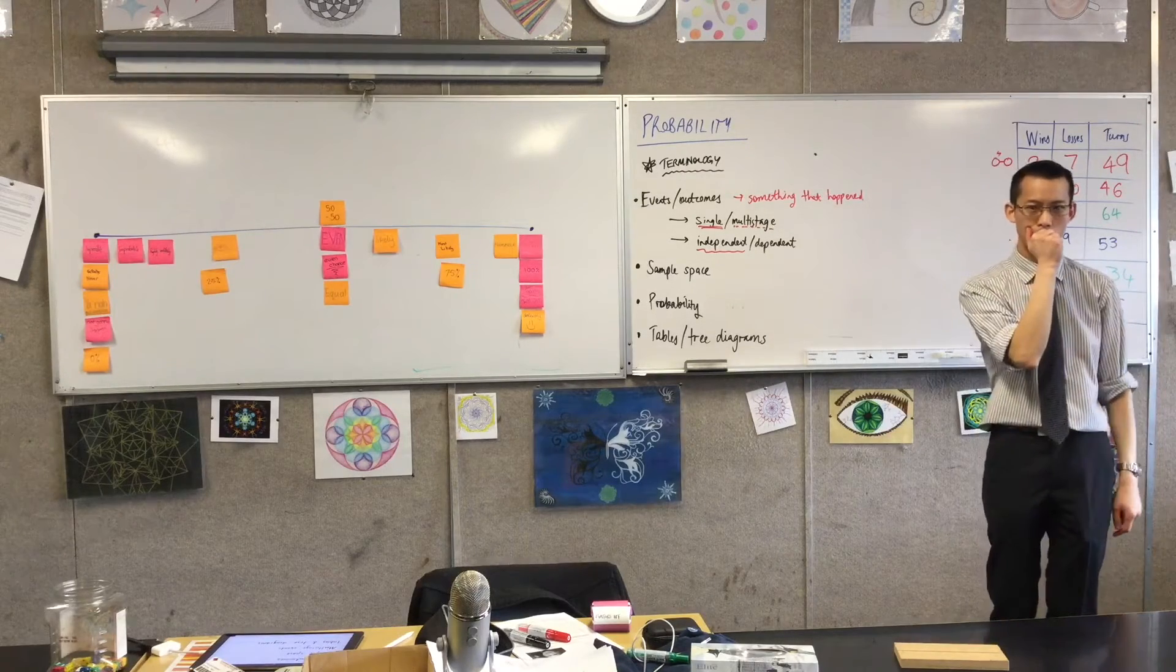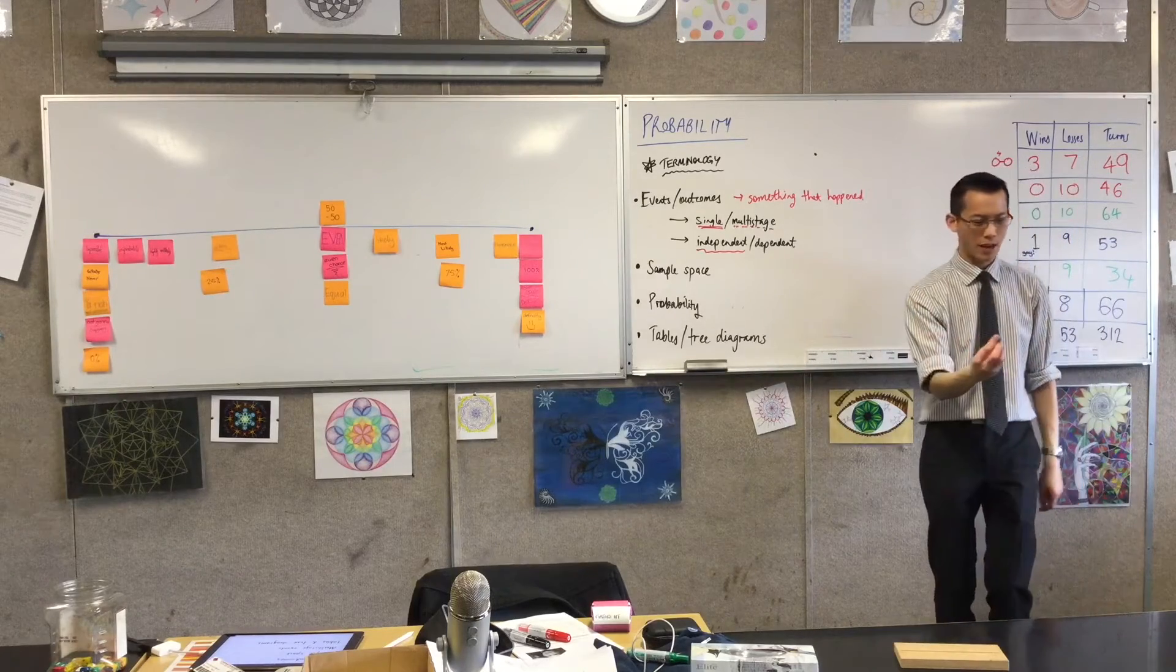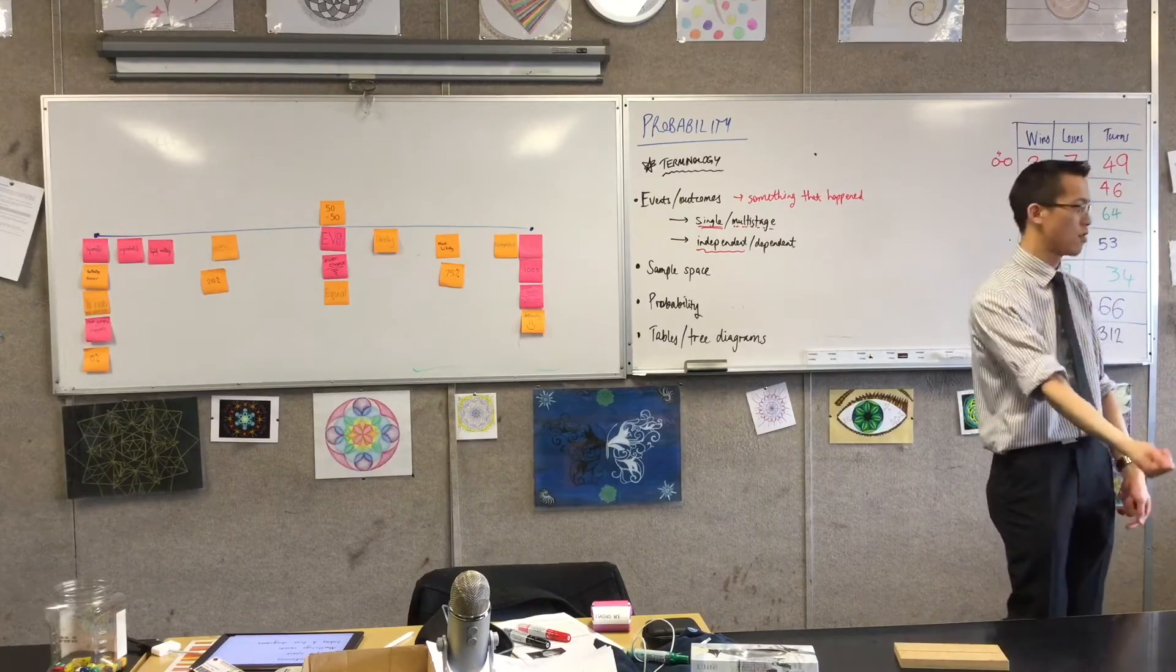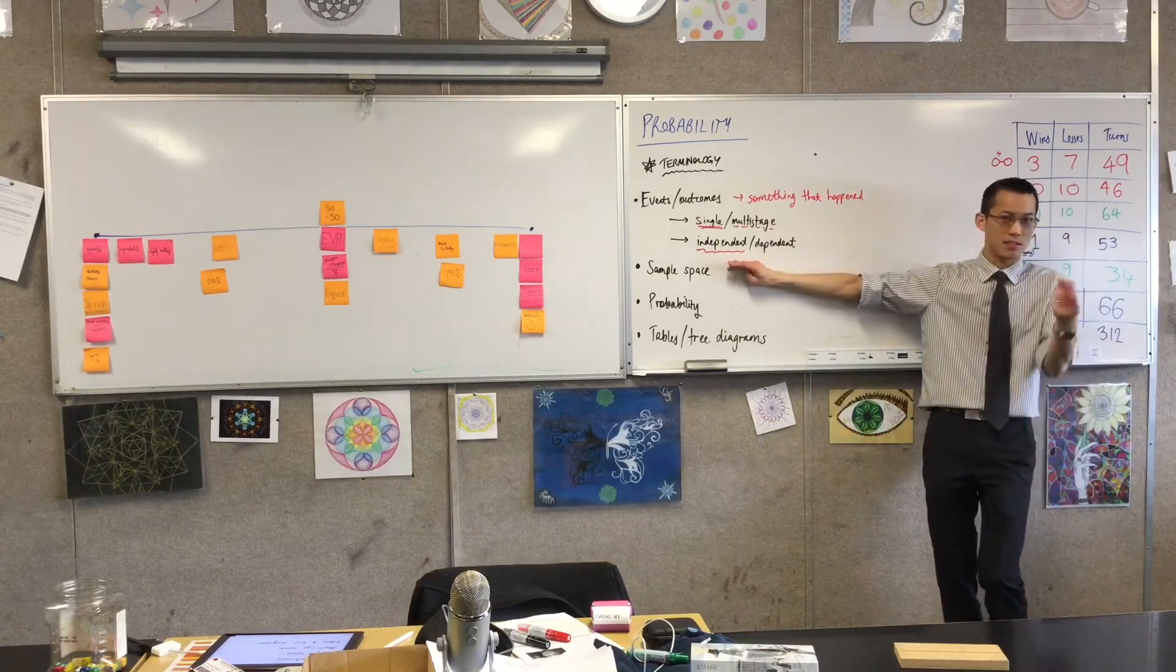Is the chance independent each time or is it dependent? Does the previous roll affect your chance of getting six the next time? It's independent, because every time, the first time you roll and the 100th time you roll, they're the same kind of roll. Independence: one in six, sixteen percent-ish, every single time.